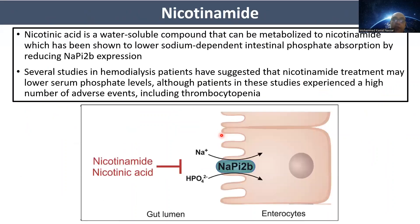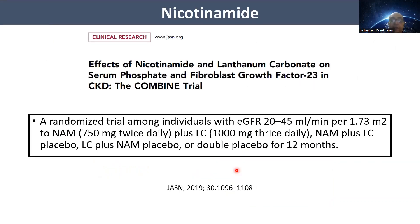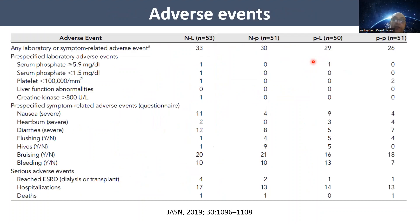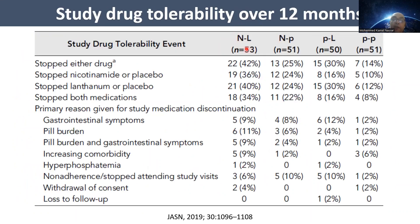Another drug is nicotinamide, which blocks transcellular phosphate absorption via the sodium-phosphate transporter 2B. A recent study combined lanthanum carbonate with nicotinamide, comparing four groups: nicotinamide plus lanthanum, nicotinamide plus placebo, placebo plus lanthanum, and placebo plus placebo. There was no significant change in serum phosphate when comparing lanthanum or nicotinamide to placebo, adverse events were comparable, and drug discontinuation was highest in the combination group. This study revealed that this combination did not improve hyperphosphatemia management.